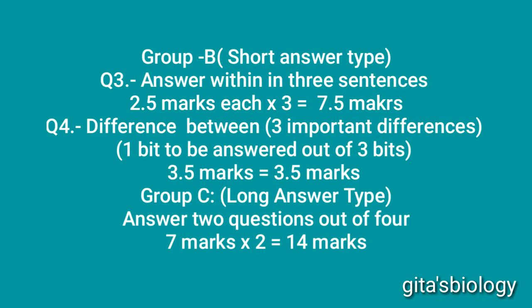Group B gives two questions — question number three and question number four. For question number three, answer within three sentences; you will do only three questions, each containing 2.5 marks: 2.5×3 = 7.5 marks. For question number four, write differences between two things — only three important differences. You take only one question out of three, and it contains 3.5 marks.